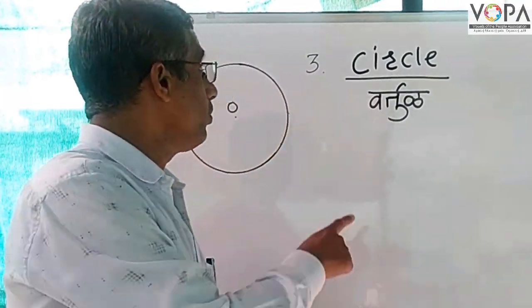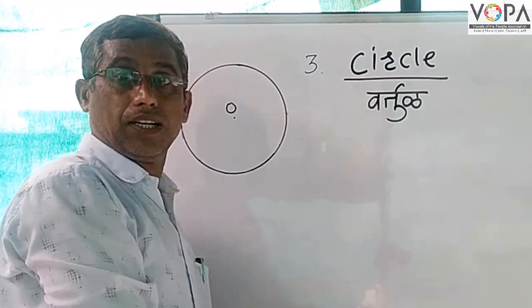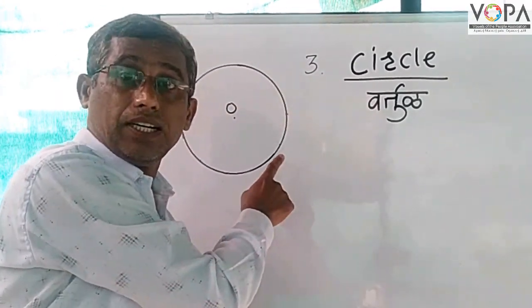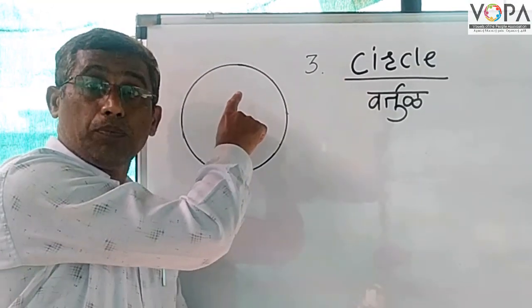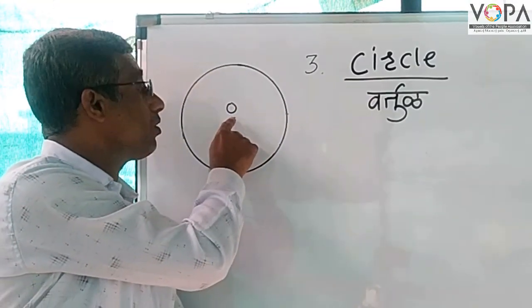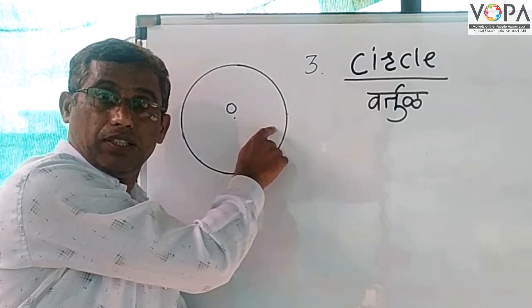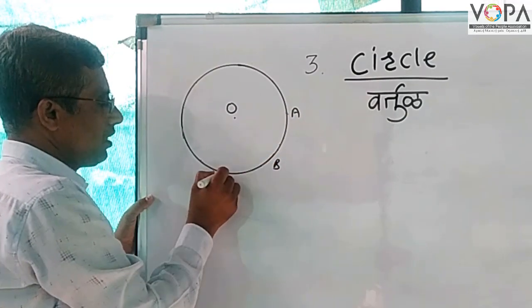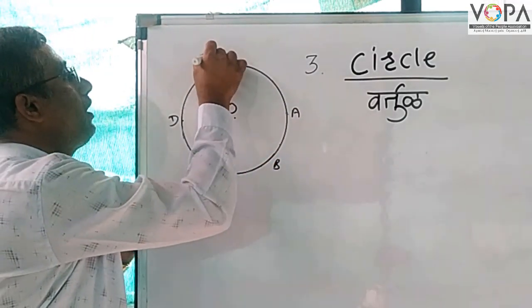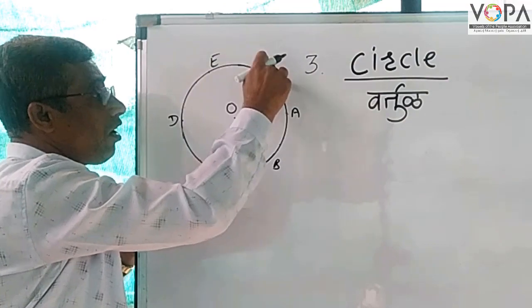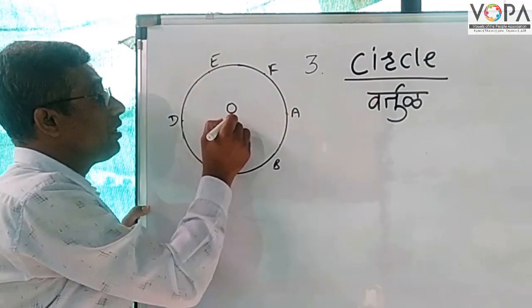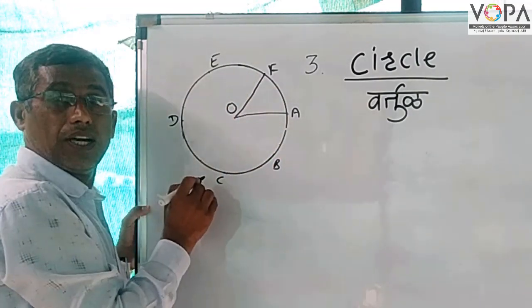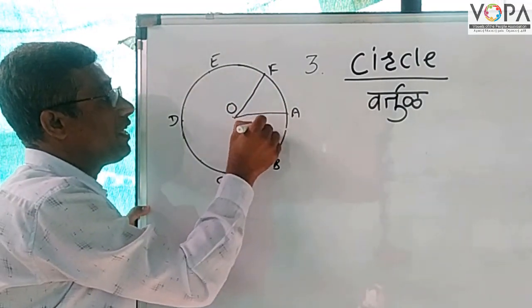Hello students, today we are going to learn Chapter 3: Circle. What is a circle? In Marathi it is called a 'vartu'. A circle is a collection of all points within a plane which are at a constant distance from a fixed point. For example, points A, B, C, D, E, F are all points on the circle, and their distance from the center point O is constant. This distance is called the radius.